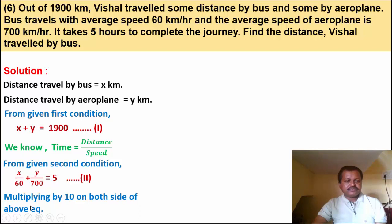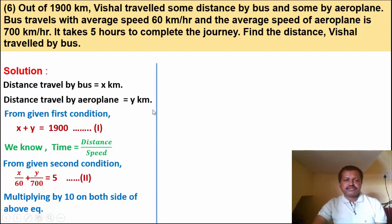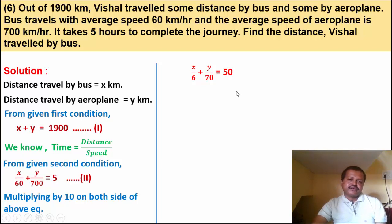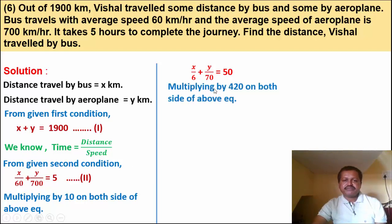Multiplying equation 2 by 10 on both sides: x upon 6 plus y upon 70 equals 50. Now multiplying by 420 on both sides of this equation.